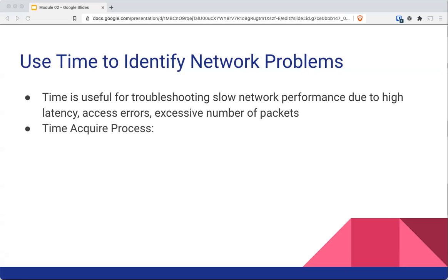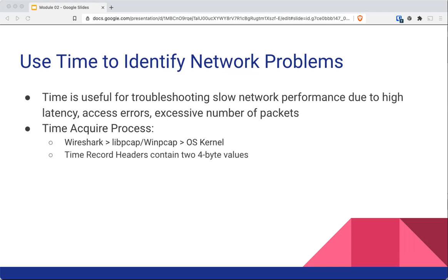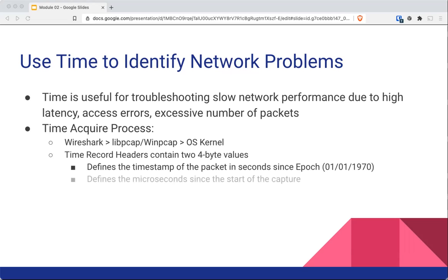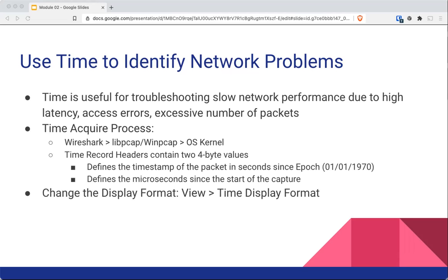Wireshark gets timestamps from the libPCAP library, which in turn gets them from the OS kernel. The PCAP file format consists of a record header for each packet — a four-byte value defining the packet in seconds from epoch, or January 1, 1970, 00:00 UTC — followed by another four-byte value defining the microseconds since that point in time. In order to make changes to time, you would go under View > Time Display Format. Ideally, before you start your capture, you want to ensure that your operating system is already in sync with Network Time Protocol.